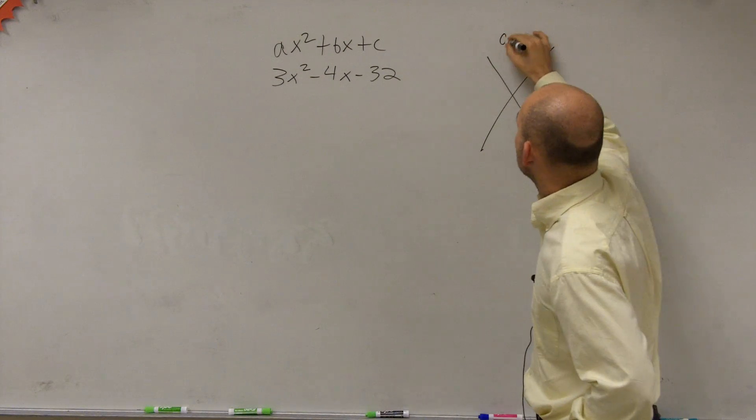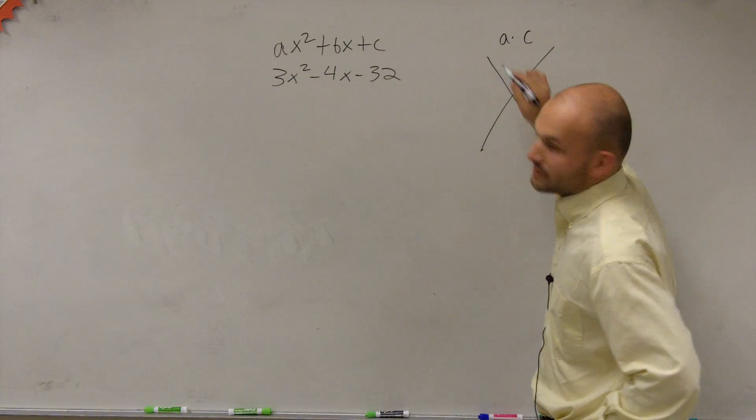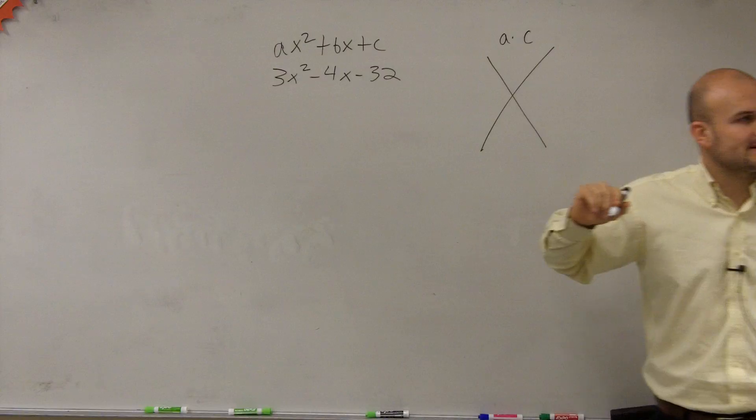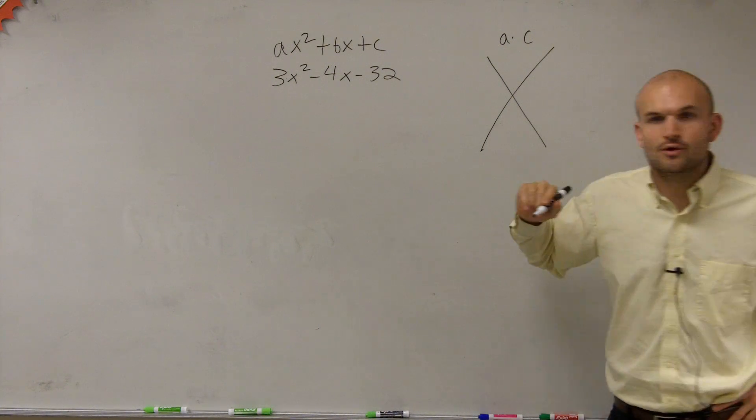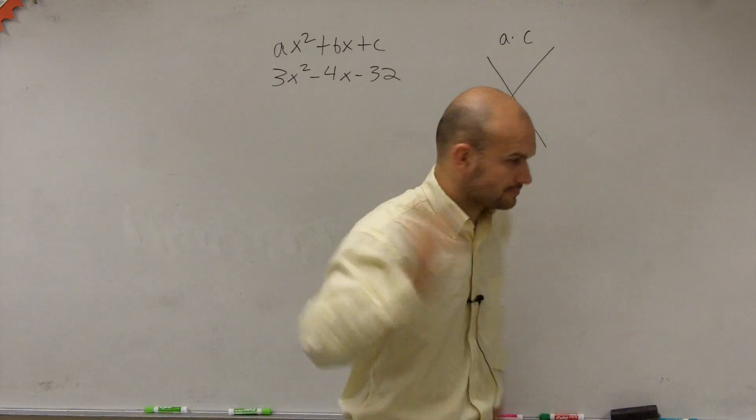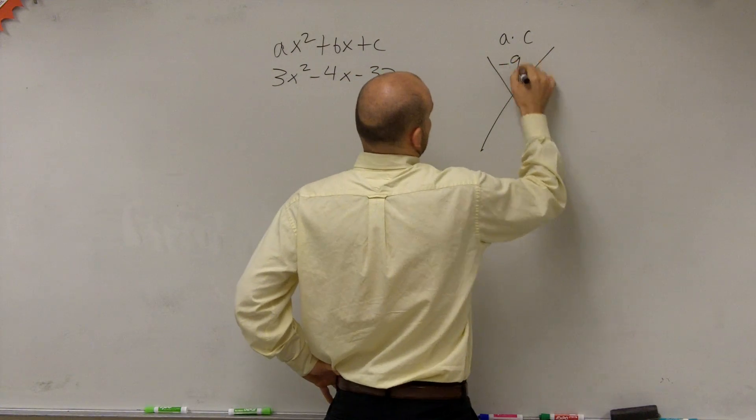So what we can do is, on top, we do a times c. So 3 times negative 32 is going to give us negative 96.